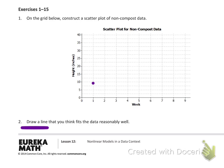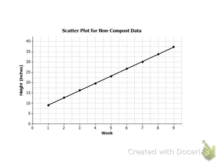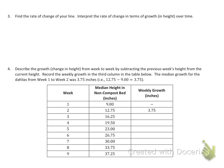Here is the completed scatterplot for the non-compost data. Not only does this look like a linear trend, it almost looks like the equation of a line itself — not so scattered. Here's a line that pretty much goes through every single data point. This is our linear model.